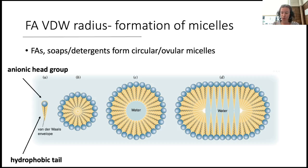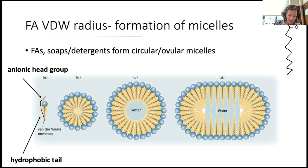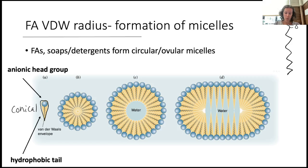Fatty acids, as we drew, have this very simple structure with the carboxylate group at the top and then a long carbon chain that I've simplified here. Now if we zoom out and try to look at the overall shape, the van der Waals radius of this type of fatty acid we would say is more conical. We're going to have a lot of electron density up at that negative charge around the carboxylate, and a little bit less electron density as we go down that lipid tail.